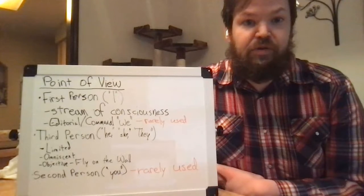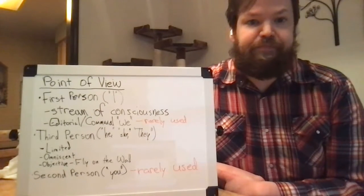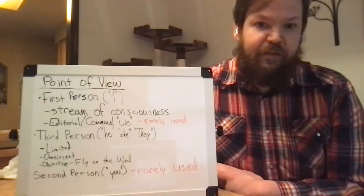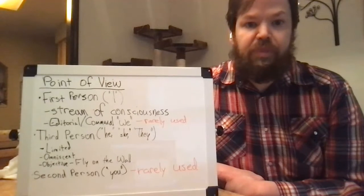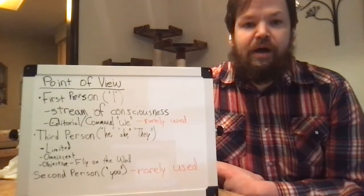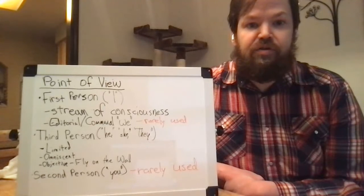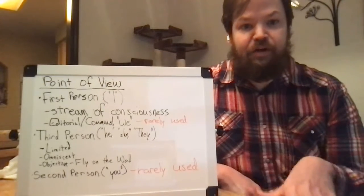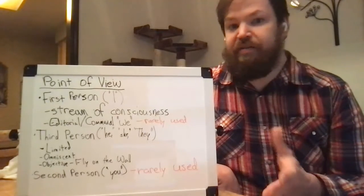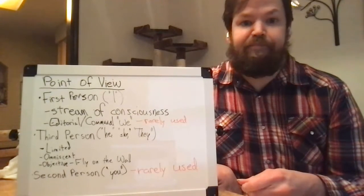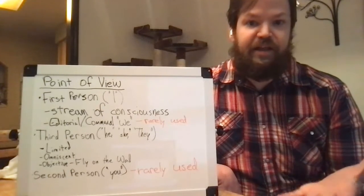In a first person story that's using 'I', you only get one character's point of view. 'I did this. I thought this. I went to the store.' You only get one person, and you can only be where that person is. If you're stuck with that one person, then you can't tell what's going on in another part of town, because they can't teleport out of their body and go to that other part of town.